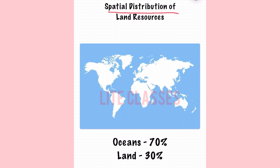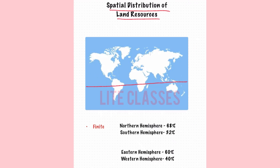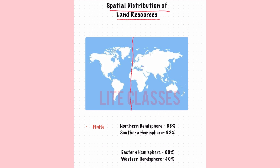Let's see the spatial distribution of land resources across the world. Oceans comprise 70% of the world's surface and continents comprise only 30%, meaning land resources are fixed and finite. Hemisphere-wise, 68% of the world's land lies in the northern hemisphere and only 32% in the southern hemisphere — this is why the northern hemisphere is called the land hemisphere. 60% of the land lies in the eastern hemisphere, while 40% lies in the western hemisphere.